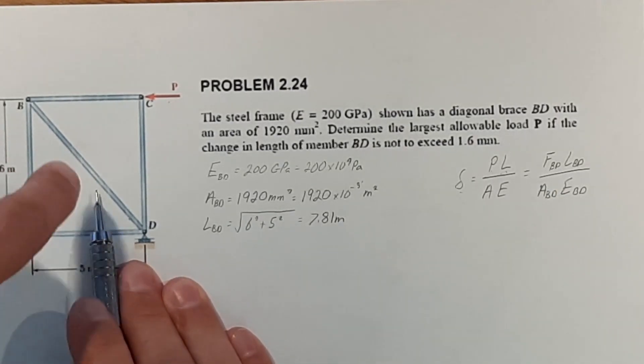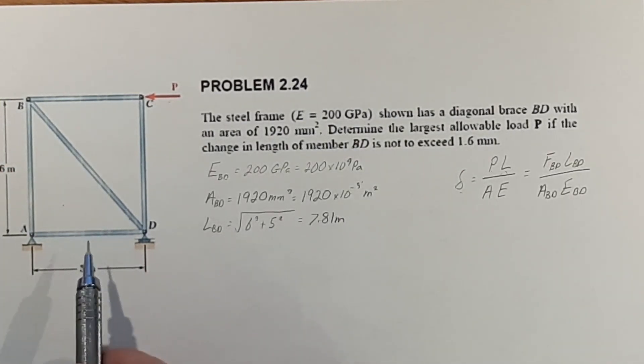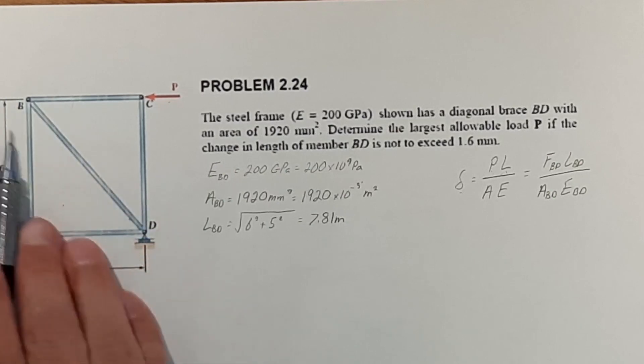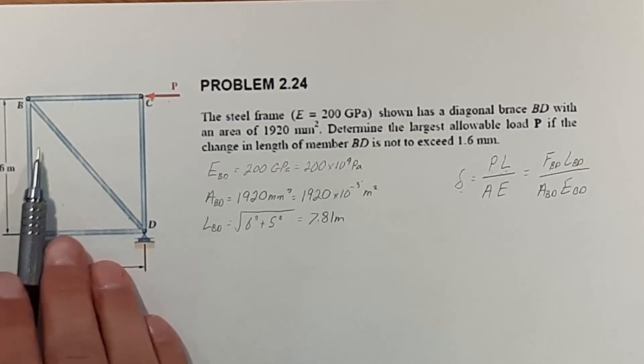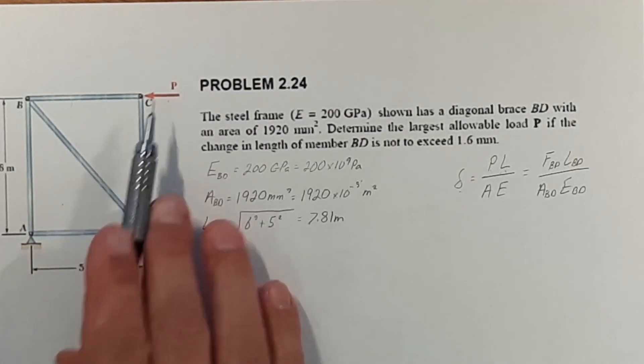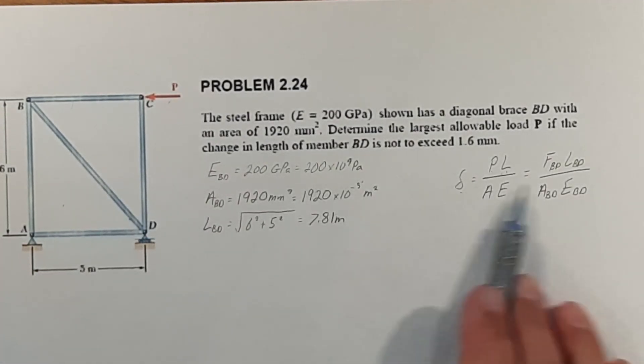Once we have the force in BD, then we can do our free body diagram at B and do our sum of forces. And then from our sum of forces, we can find P. So let's start off by putting all our information in and finding what F of BD is.